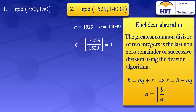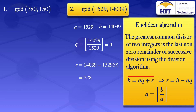Our remainder is B minus AQ, which gives us 14,039 minus 1529 times 9, which gives us 278. And using the division algorithm, we have 14,039 equals 1529 times 9 plus 278.